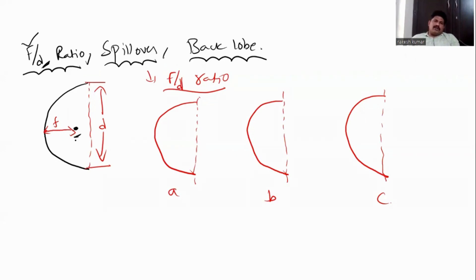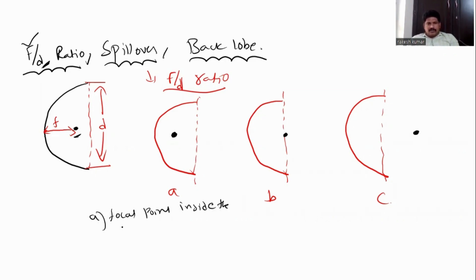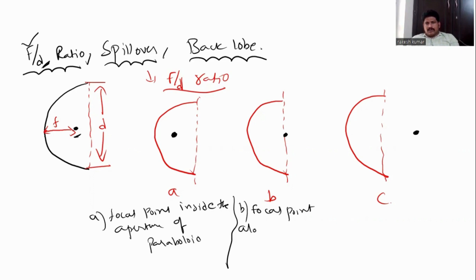So, here, where can I keep my active antenna? At A, I am keeping my antenna or focal point inside. The second point I am keeping here. And the third point I am keeping my feed point outside. So, the three possible cases are: first, the focal point inside the aperture of the paraboloid; second, the focal point along the plane of the open mouth of the paraboloid.